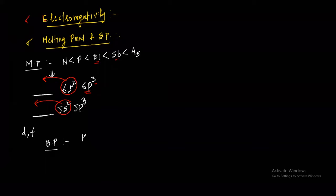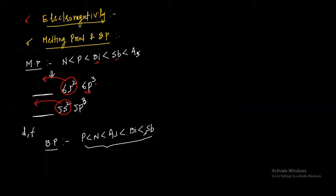The boiling point order is: minimum for phosphorus, then nitrogen, then arsenic. This is also not a regular trend, so you must remember it. Generally, as we go down the group boiling point increases due to increase in atomic size, but phosphorus and nitrogen are an exception — the boiling point of phosphorus is less than that of nitrogen.